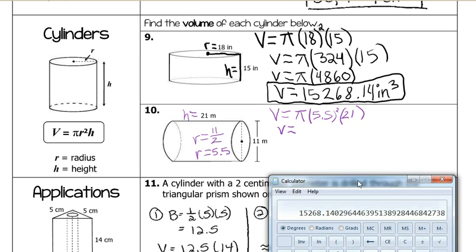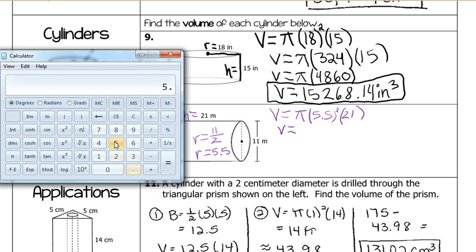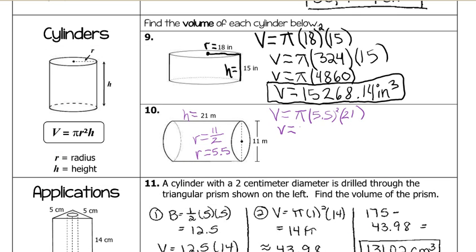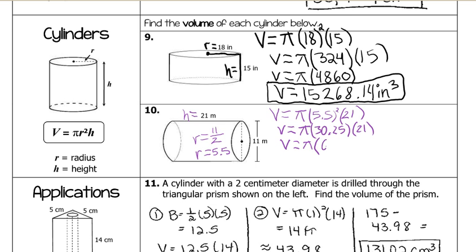I'm still drinking my coffee. Five point five times five point five equals thirty point two five. So thirty point two five. So I got my pi here. Thirty point two five times twenty one. Volume equals, keep the pi. Thirty point two five times twenty one equals six thirty five point two five.